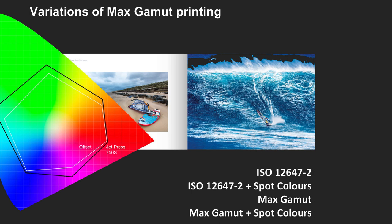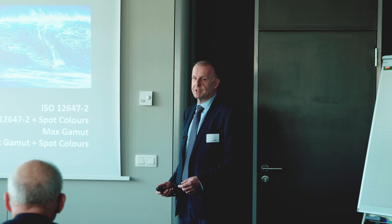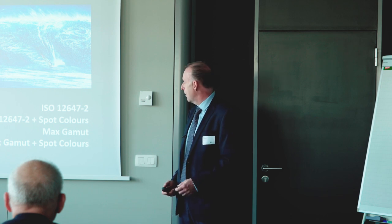In terms of the colour output variations from the JetPress, we can print to ISO standards and the various conformances, all based around the ISO standards, and Max Gamut, which has been a component of JetPress for some time. We can now add multiple spot colours into that printing process as well. While this is an application specifically more important for packaging, it also applies to any brand work taken on board by our customers.